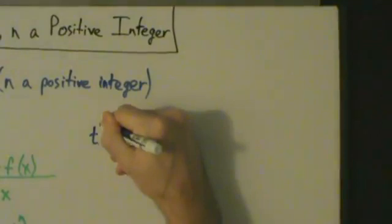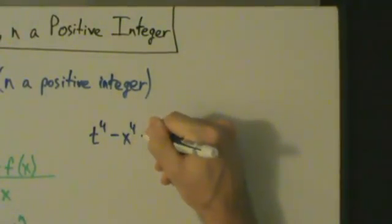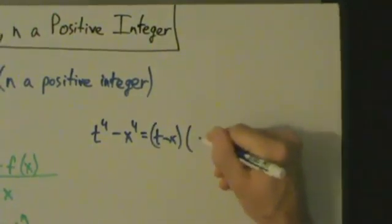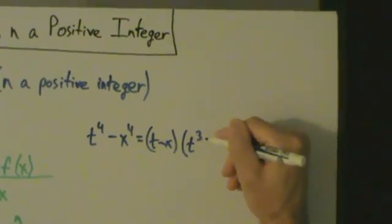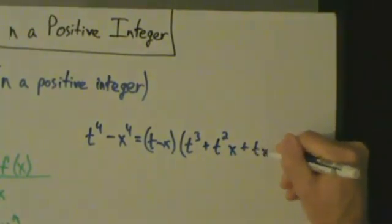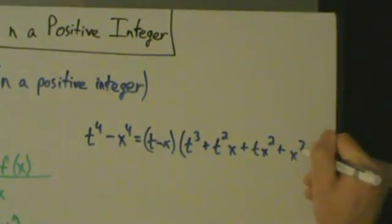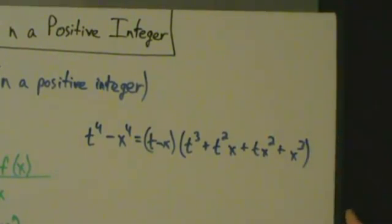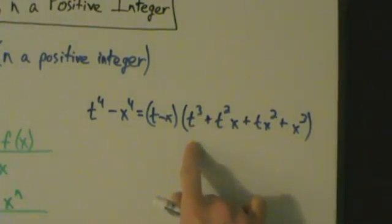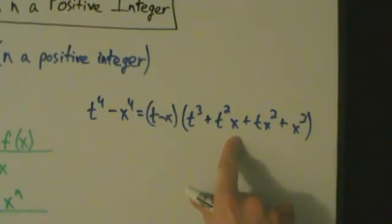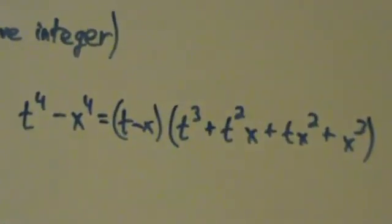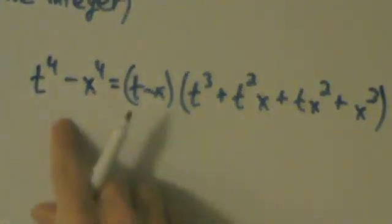Let's say we have t to the fourth minus x to the fourth. If we factor out a t minus x, then what we're going to be left with is t cubed plus t squared x plus t x squared plus x cubed. So notice the pattern there — we pull out a t minus x, and what we have left is t to the third power, plus t squared times x, plus t times x squared, plus x cubed.